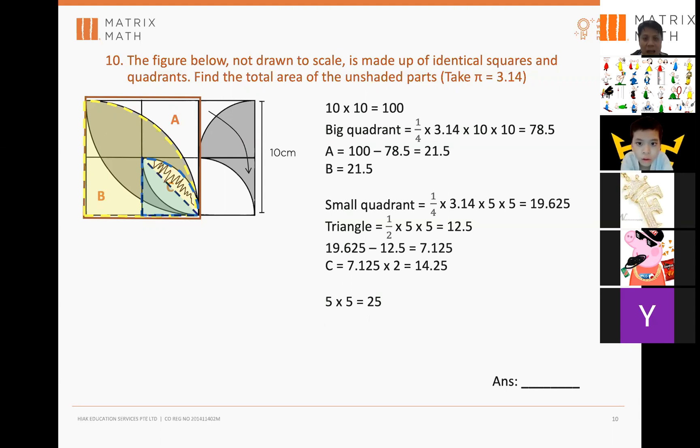So, area of the unshaded parts will be area of A plus area of B plus the area of C plus the area of the square over here. So, the total area of the unshaded parts is 82.25.